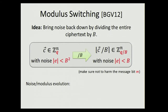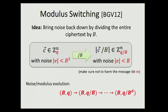How does the noise and modulus evolve across multiplications using module switching? We start with noise B and modulus Q. After each multiplication followed by a module switch, the noise stays at B but the modulus drops to Q/B^D after D steps. For decryptability we need B^(D+1) < Q/4. This is much better than before—previously we had B^(2^D); now we only have B^D.